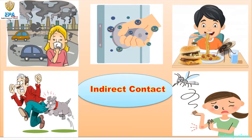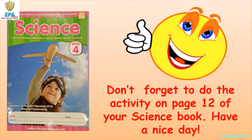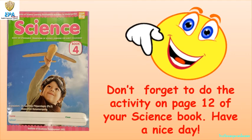So what should we do, kids, to avoid the transfer and spread of diseases? We should keep our body and our surroundings clean. We will be talking more about keeping our body clean in our next video. Don't forget to do the activity on page 12 of your science book. Please take photos of the activities that you have answered and send them back to teacher.